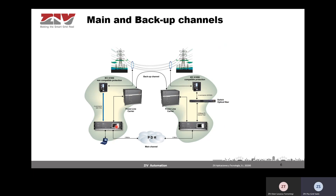Another example of redundancy: here we have, as a main channel, a digital one, and as a backup channel, an analog one which is sending commands through a power line carrier. This configuration is very common for strategic lines or very high voltage lines, because the reliability of power line carrier systems under specific conditions is very well known.